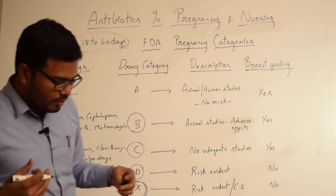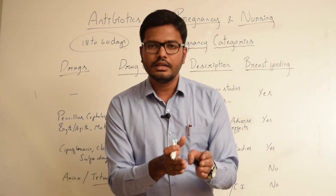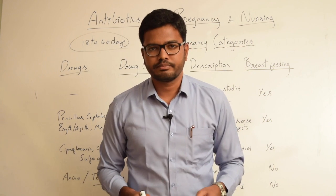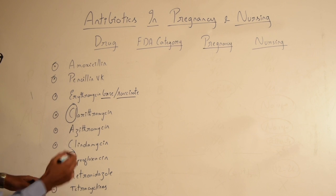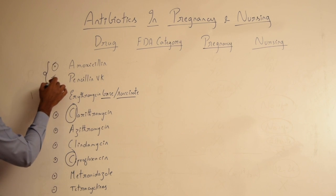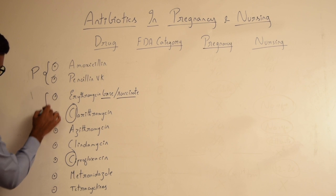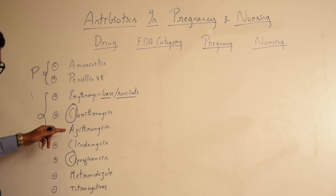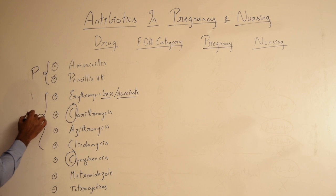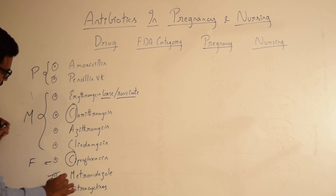Now let's see the antibiotics that can be prescribed during pregnancy and lactation, divided by group. Amoxicillin and penicillin VK belong to the penicillin group. Erythromycin, clarithromycin, azithromycin, and clindamycin belong to the macrolides. Ciprofloxacin belongs to the fluoroquinolone group, and then we have metronidazole and tetracyclines.